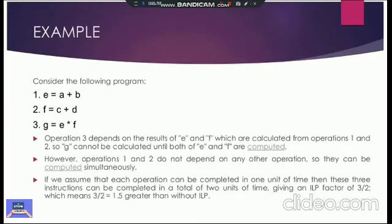Let's clear the concept of dependency and instruction level parallelism with the help of an example. You can see that there are three instructions given that need to be executed. The instruction number one is e equals a plus b. You can see that a is not dependent on any other instruction. b is also not dependent on any other instruction. So instruction one is not dependent on any other instruction.